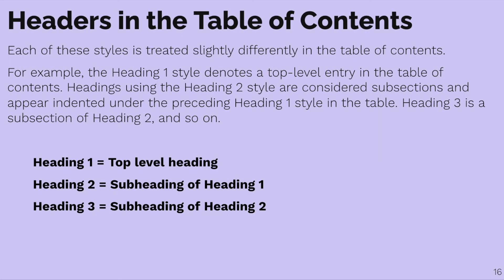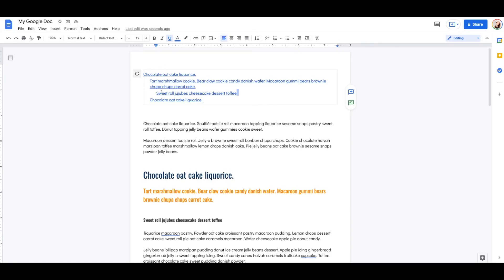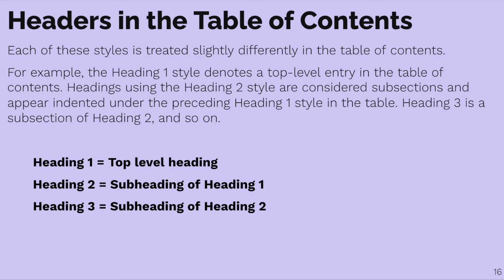Headers in the table of contents are viewed in a specific way. Header 1 is the top-level entry of the table of contents. Header 2 is the second level of a subsection, and it's indented. Heading 3 is a subsection of header 2, and so on. It goes from top-level to second to third, and it starts indenting. This is why we want to meaningfully use our headers.